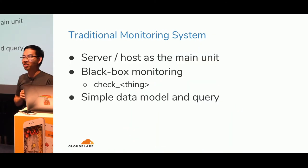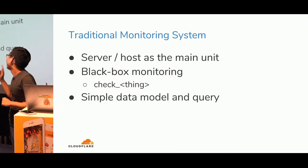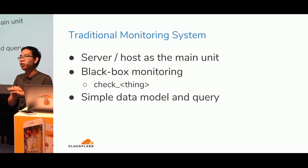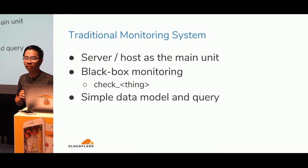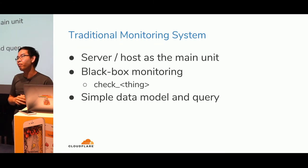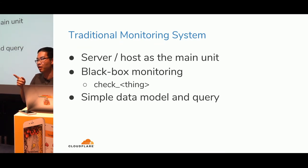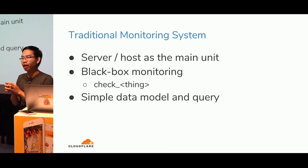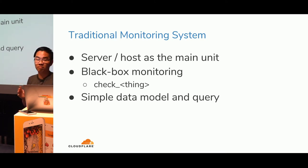So the traditional way of monitoring — which was already shared earlier — is that the main unit of monitoring is normally a server or host. You're monitoring your DB server or your application server. The way you observe it is by running external checks, like in Nagios: check HTTP, check ICMP, check DNS. This is observing the system from the outside — we call it black box monitoring. You look at the system as a black box; you don't know what's going on inside.